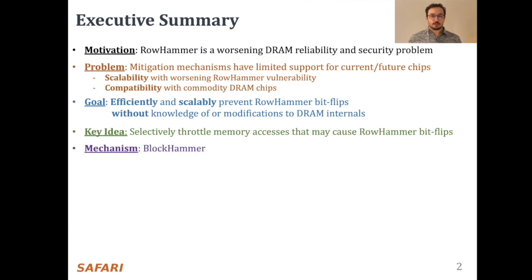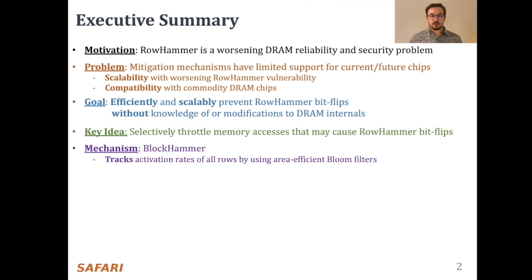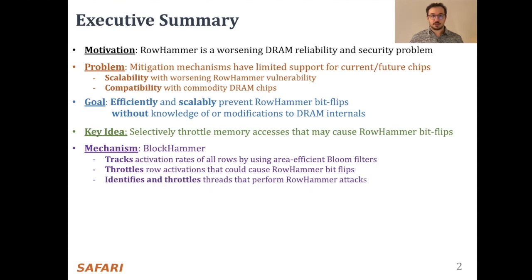Our mechanism Block Hammer performs three operations. First, it tracks activation rates of all rows using area-efficient bloom filters. Second, it throttles row activations that could lead to row hammer bitflips. And third, it identifies and throttles the threads that perform row hammer attacks.